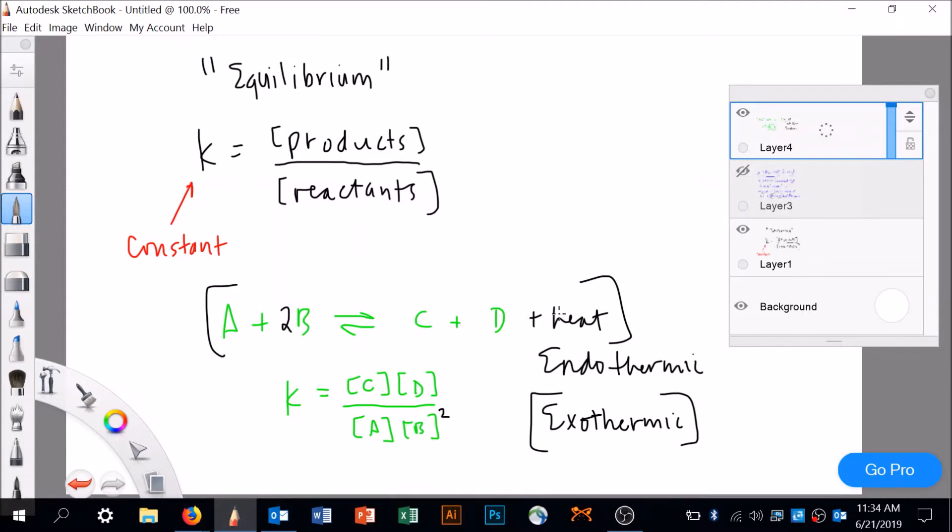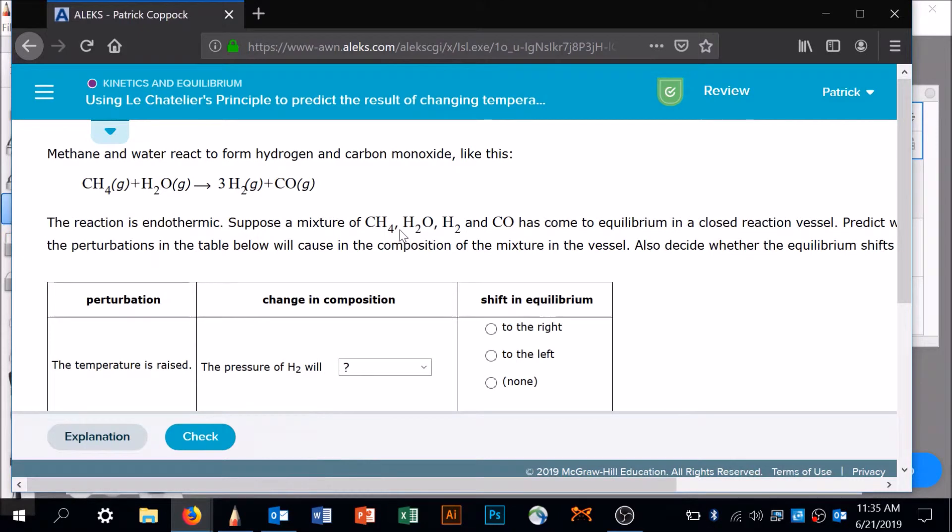A decrease in temperature for the reaction I've got here - if it's exothermic, a decrease in temperature is going to say we need more heat over here, so it's going to bring it that way. Let's go do a couple example problems.